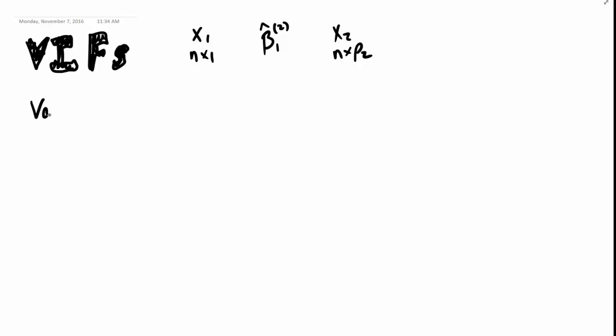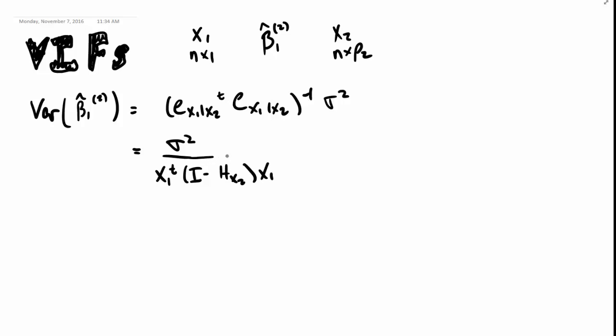So we've already shown that the variance of beta 1 hat fit under model 2 is equal to E of X1 given X2 transpose E of X1 given X2 inverse times sigma squared. Where in this case, recall that X1 is a scalar. So we can write this out then, so this is one dimensional, it's not a matrix inverse, it's just a ratio. So we can write this out as X1 transpose I minus HX2 X1.